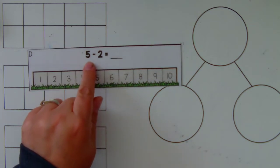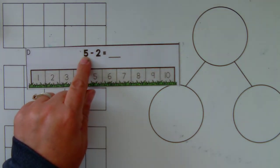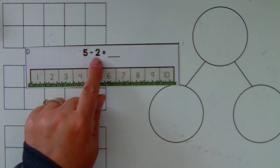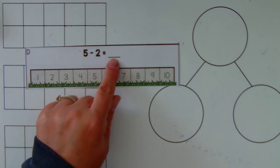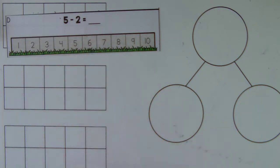Here we have the number 5, and the equation says 5 take away 2 equals blank. Let's go ahead and write that equation.